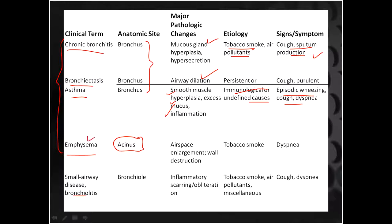Today we discuss emphysema. All three other categories — bronchitis, bronchiectasis, asthma — happen in the bronchial region, but emphysema happens in the acinus. The major feature is alveolar destruction. The major causes are tobacco smoke and alpha-1 antitrypsin deficiency. Whenever alveoli are destructed — whether after the respiratory bronchioles, whether centrally, distally, or proximally — there is airway enlargement and irreversible wall destruction, which causes dyspnea.